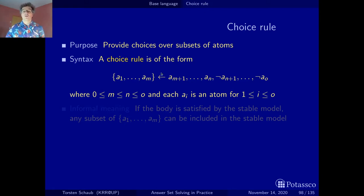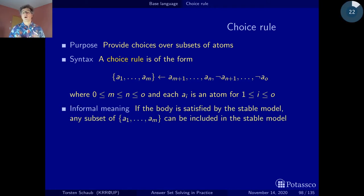Otherwise it looks a bit like a normal rule, so we have the normal body of a rule. But in the head we have a set and we can more or less choose any subset of this set to be part of the stable model. So the informal meaning is if the body of the rule is satisfied, any subset of the elements from a1 to am can be included in the stable model. This ranges from the empty set to the set of all atoms, and everything in between.